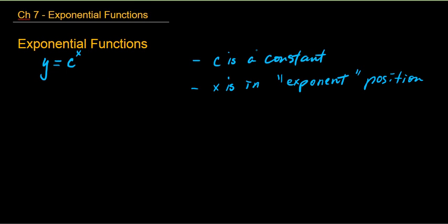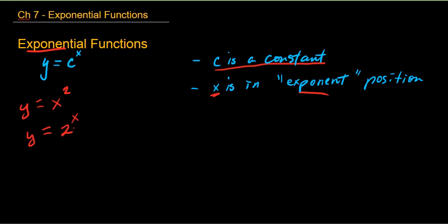An exponential function has this form: y equals c to the power of x, where c is some constant. Normally in other functions, the x value is multiplied, added, or taken to a constant power. But in an exponential function, x is in the exponent position — that's what makes a function exponential. Compare this to a quadratic function: if we flip those two around, that's an exponential function. The input variable, the independent variable, is in the exponent position.